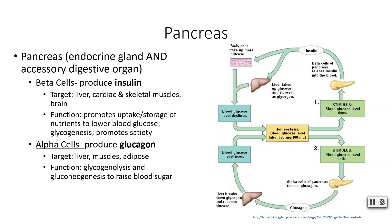Your pancreas is both an endocrine and an accessory digestive organ. The beta cells of your pancreas produce insulin, while the alpha cells produce glucagon. Insulin's target cells are your liver, cardiac and skeletal muscle cells, and even your brain. Insulin is used to promote the uptake and storage of nutrients to lower blood glucose levels. Right after a big meal, insulin is released and triggers body cells to take up glucose from the blood and use it for energy. It also promotes satiety — your body's feeling of being full.